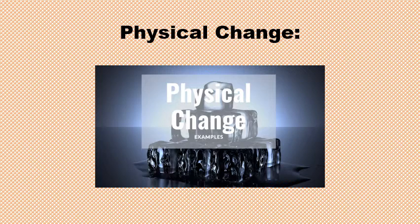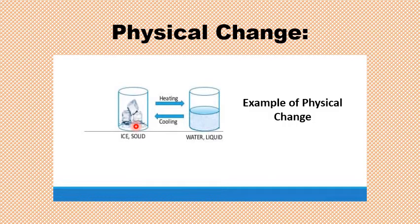A physical change is a temporary change in the state of matter which can be reversed. Physical change ek temporary change hota hai matter ki states mein jo dubara reverse ho sakta hai. If we heat the ice cube, it will convert into a liquid. Then, if we freeze this liquid, it will convert into a solid. Jab hum ice cube ko heat karenge, toh liquid mein change ho jayega. Lekin jab is liquid ko dubara freeze karenge, toh ye dubara ice mein convert ho jayega. Physical change woh temporary change hai jo dubara reverse ho sakta hai.